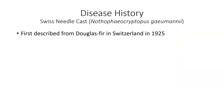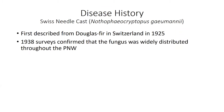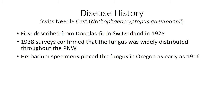Just to provide some context by way of background, Swiss needle cast is a foliar disease caused by the fungus Nothopheocryptopis gemenii. The disease was first described from Douglas fir in Switzerland in 1925, hence the name Swiss needle cast. It's likely that these infected Douglas fir were imported from the Pacific Northwest, and surveys in 1938 confirmed that the fungus was widely distributed throughout Oregon and Washington. In fact, herbarium specimens place the fungus in Oregon as early as 1916.